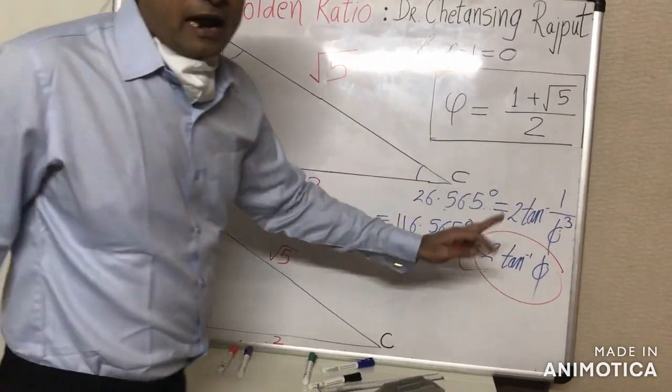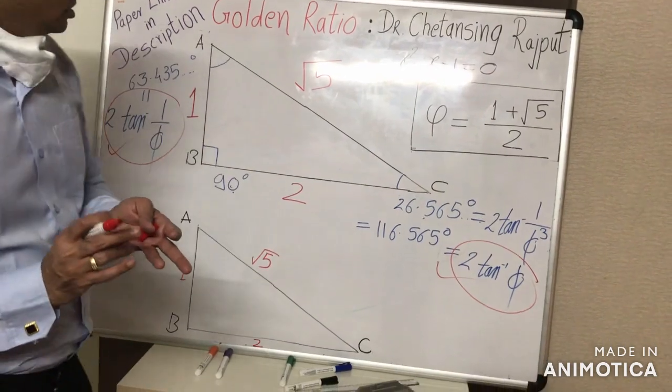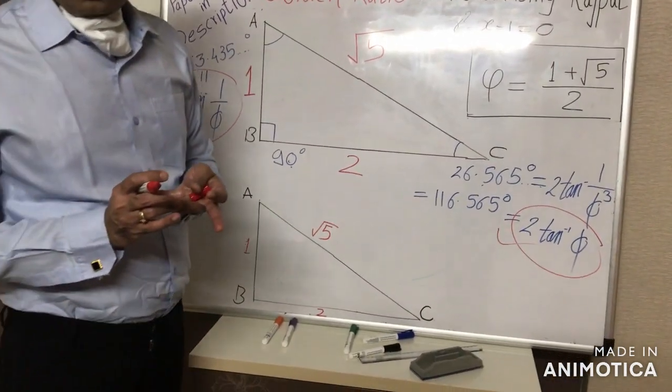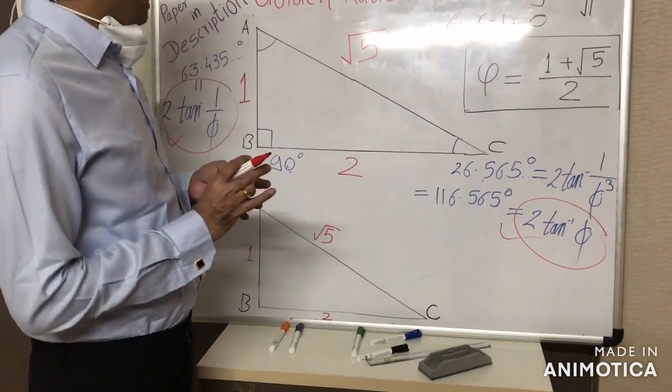Like these two angles are the dihedral angles of regular dodecahedron, great dodecahedron, small stellated dodecahedron, etc.